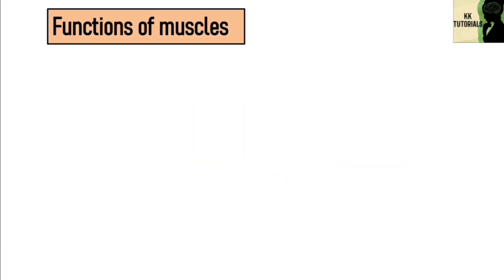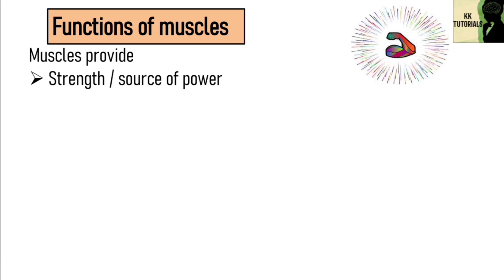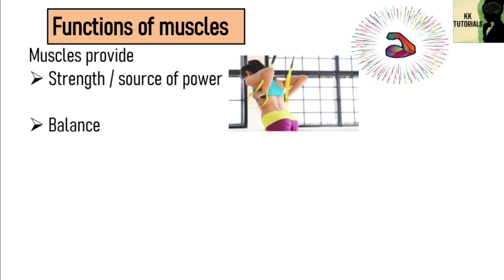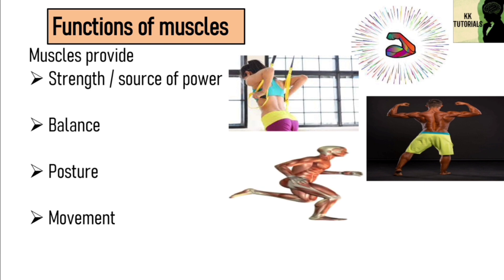Now let's talk about the functions of muscles. Muscles provide the strength to the human body. They also give you balance. Muscles also help to keep the body in correct position when someone is sitting or standing — this is known as posture. The muscular system's main function is to allow movement. When muscles contract, they contribute to movement. Muscles also provide heat for the body to keep warm.